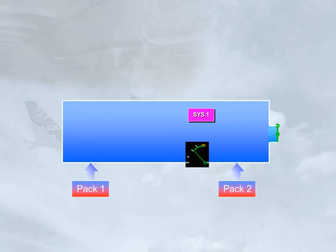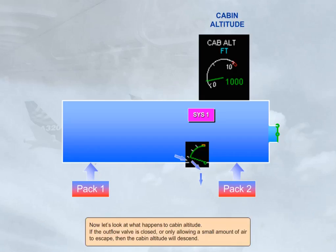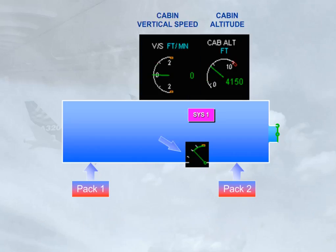Now let us look at what happens to cabin altitude. If the outflow valve is closed, or only allowing a small amount of air to escape, then the cabin altitude will descend. We can also see what the cabin is doing by reference to vertical speed. When the outflow valve closes, the cabin altitude will decrease — negative vertical speed.